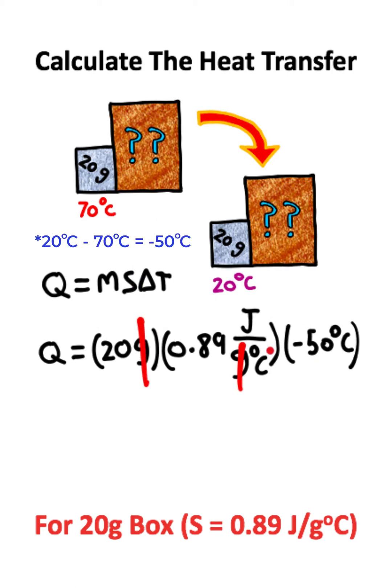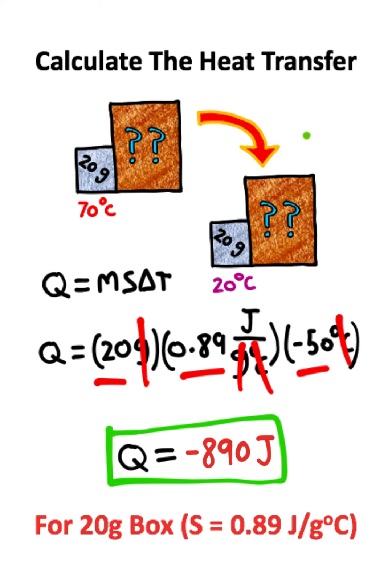So we can cancel the unit of grams, and we can also cancel the degrees Celsius, leaving us with just joules. And 20 times 0.89 times negative 50 will give you a value of negative 890 joules of heat. So this right here is the answer to the problem.